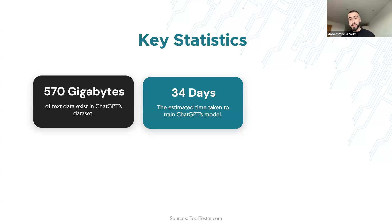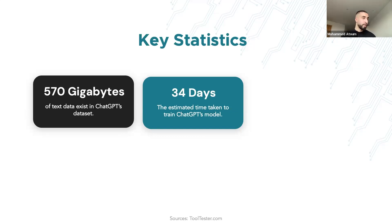The dataset was created to include diverse sources such as websites, books, articles, and forums from all over the web, ensuring a comprehensive understanding of human language patterns. Impressively, it only took an estimated 34 days to train ChatGPT, which demonstrates the immense computational power and resources invested — but also highlights the complexity and depth of the model.